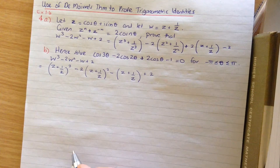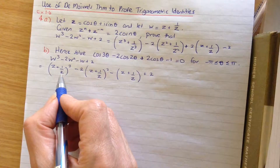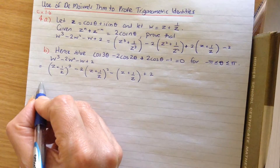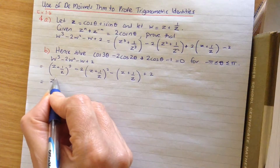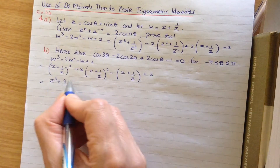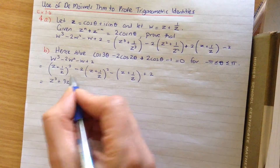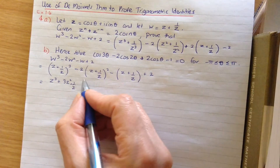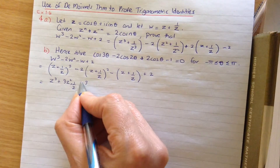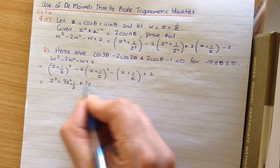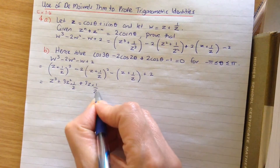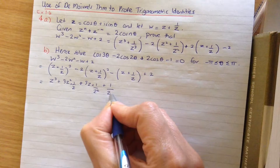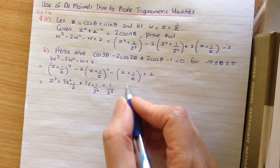We have to use Pascal's triangle for the cubic expansion. Remember the coefficients for a cubic are 1, 3, 3, 1. So that gives us z cubed plus 3z squared times 1 over z, plus 3z times 1 over z squared, plus 1 over z cubed.